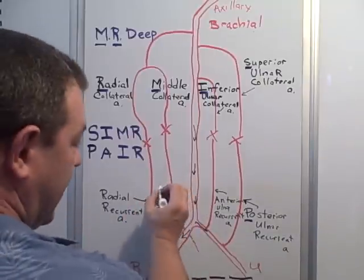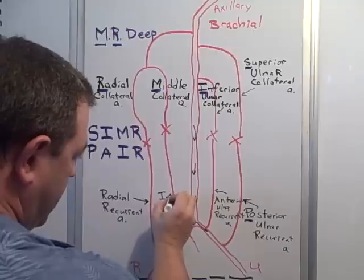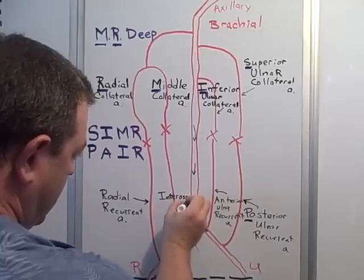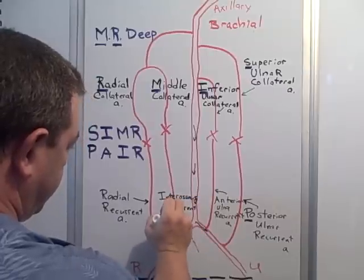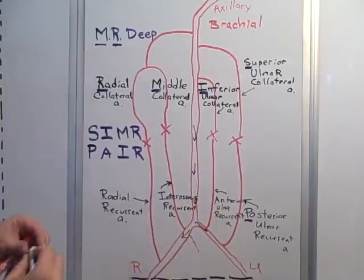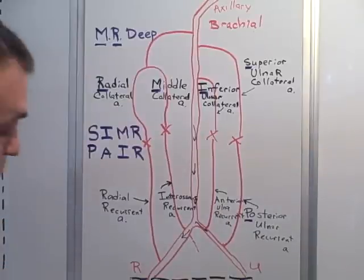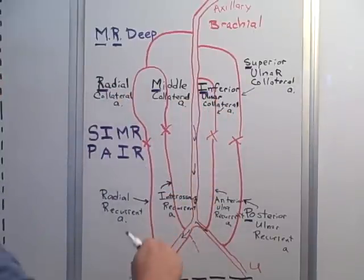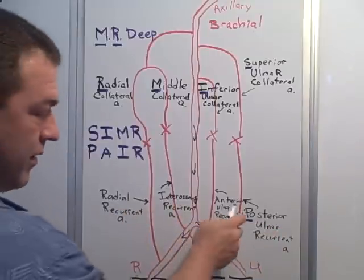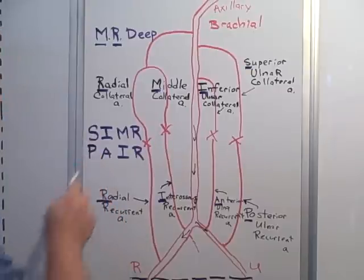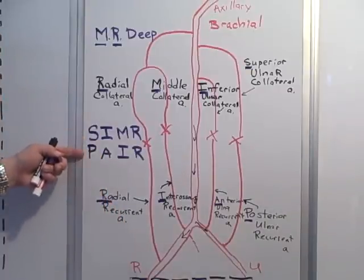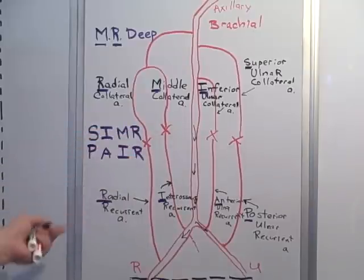This one here is the interosseous recurrent — it goes behind the interosseous membrane. We've got the four collateral arteries going down and the four recurrent arteries — SIMR PAIR. Just match up the letters to know which ones anastomose together. It's a pretty easy way to keep it straight.